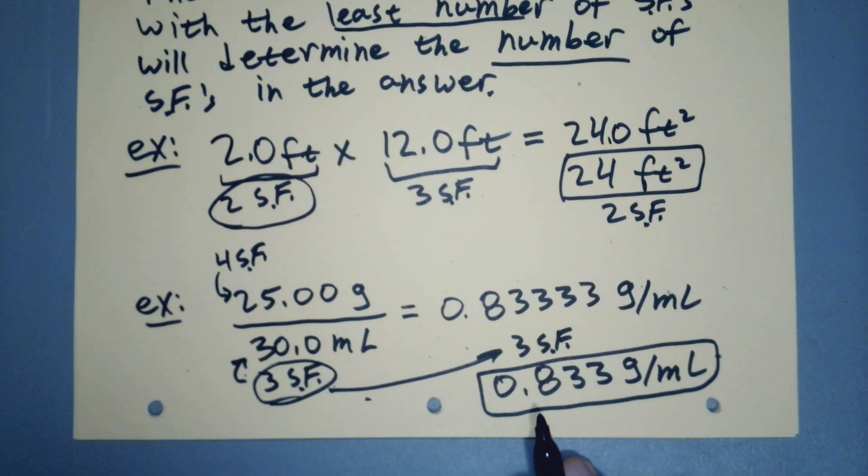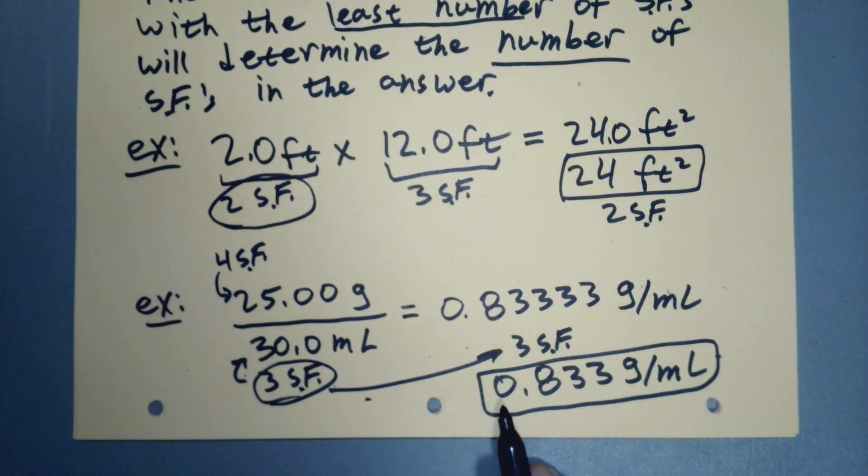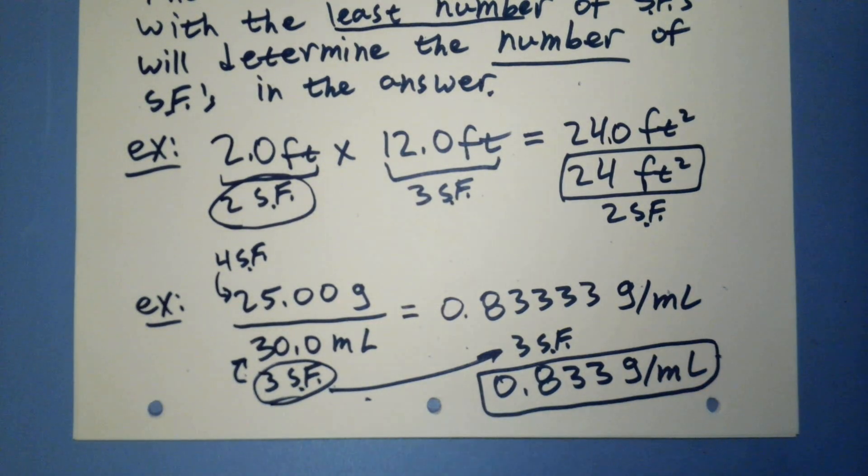So what's smaller? 3 or 4. 3 is smaller. That means we get 3 in our answer. So it is 0.833 grams per milliliter. 3 sig figs means we get 3 sig figs in our answer. Now it doesn't make sense that this is 3 significant figures. Remember, that 0, don't trust it. It's a leading 0. So 8 is significant. 3 is significant. 3 is significant. That 0 is a leading 0. It will never amount to anything. Do not waste your resources on it. It will only use them to cause harm to others. Do not trust it.